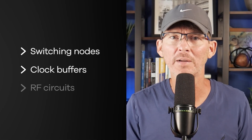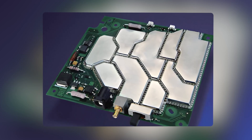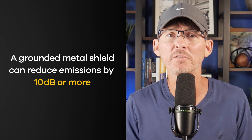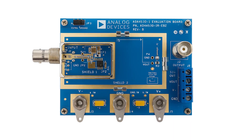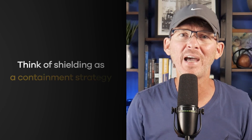Mistake number five: no shielding or guard traces on noisy sections. Some parts of your PCB will be noisier than others — like switching nodes, clock buffers, RF circuits. If you leave them wide open, that noise couples into nearby traces and radiates out of the enclosure. Simple shielding techniques can stop that noise at the source. A grounded metal shield can reduce emissions by 10 dB or more — enough to pass a test you would have otherwise failed. Guard traces can be just as effective: a single grounded trace placed between a noisy line and a sensitive line can dramatically reduce capacitive coupling. These techniques cost little during layout, but skipping them can cost tens of thousands of dollars in redesigns and lab testing fees.